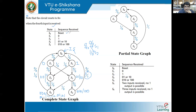S0 is the reset or initial state. S1 represents receiving a 0 as the first bit; S2 represents receiving a 1. S3 represents having received either 01 or 10 as the first two bits. S4 represents having received either 010 or 100. S5 and S6 are not associated with detectable sequences — S5 represents two inputs received with no valid one-output possible; S6 represents three inputs received with no valid one-output possible.